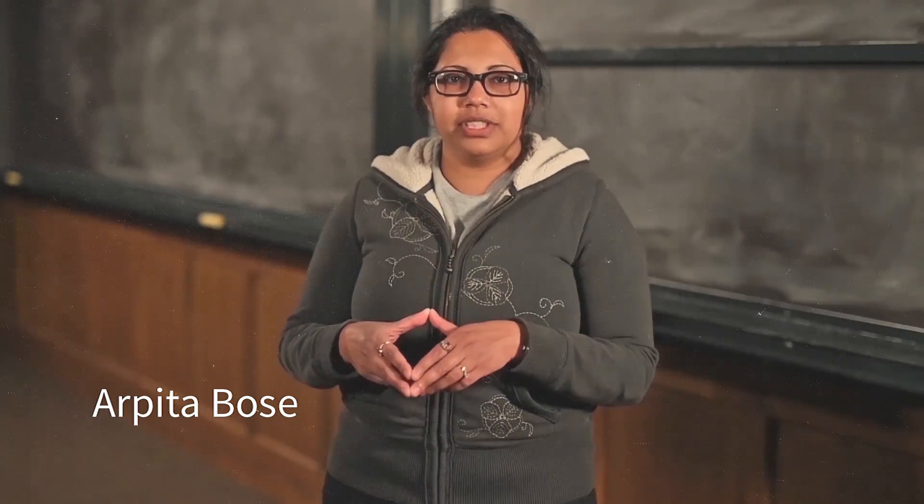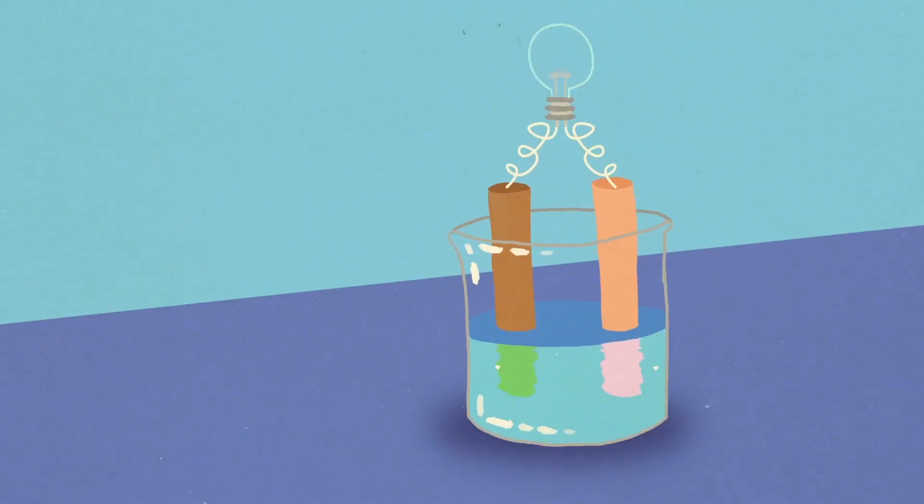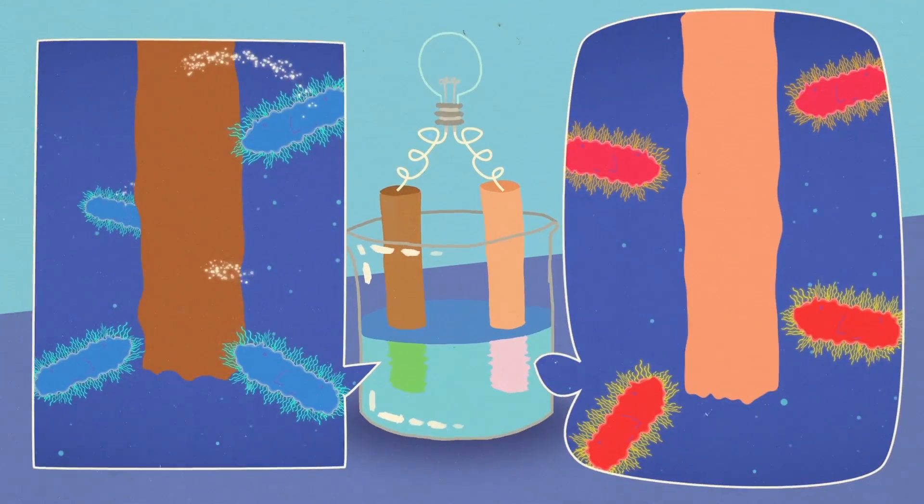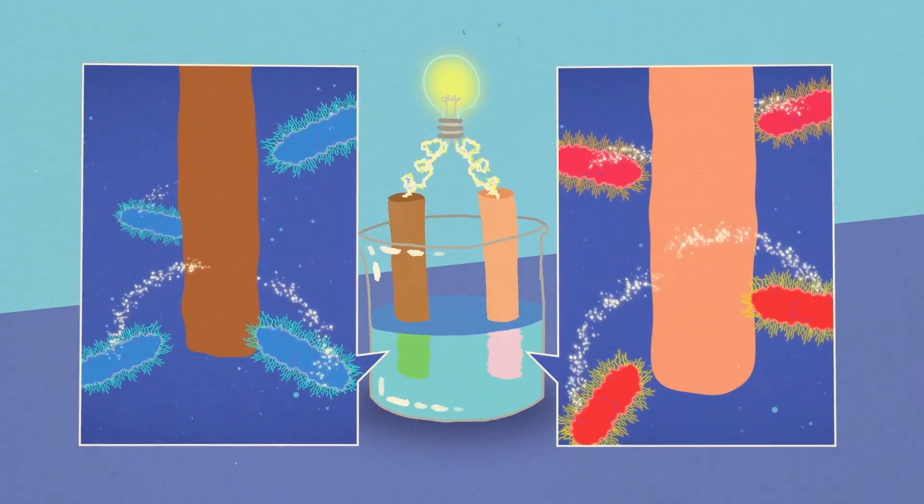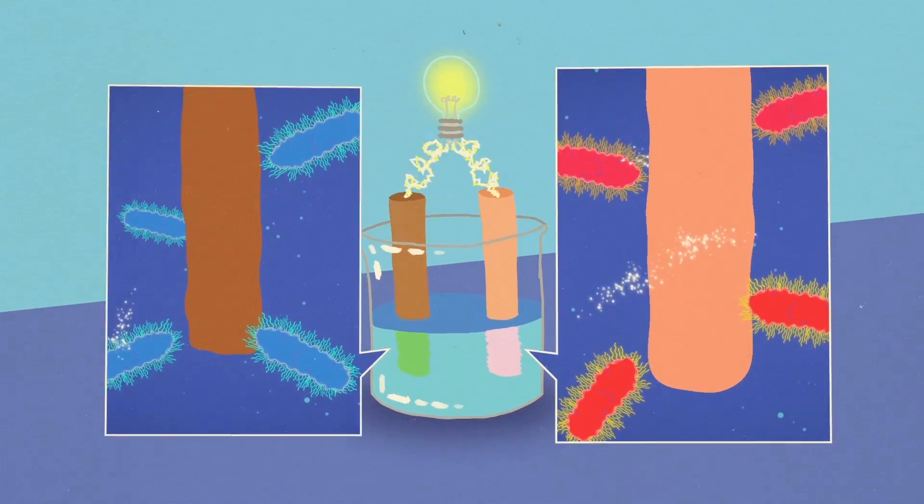Microbes actually see electrodes as being really really tasty. To them it's a source of electrons. It's also a surface on which they can transfer electrons.